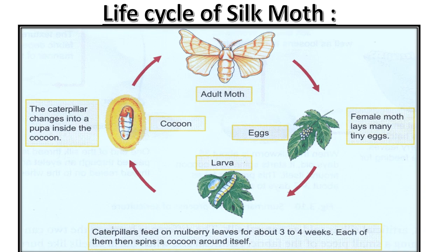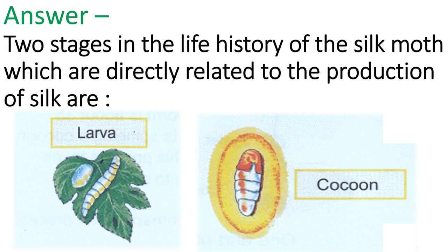After knowing about this complete life cycle of the silk moth, we can find out that the two important steps for the production of silk are the formation of larvae and cocoon. Hence the answer: the two stages in the life history of the silk moth which are directly related to the production of silk are larvae and cocoon.